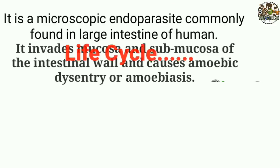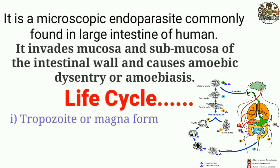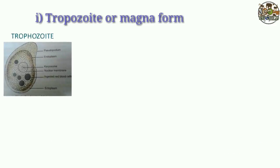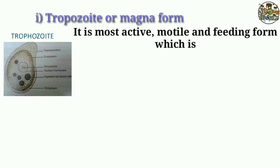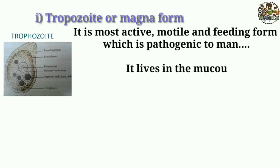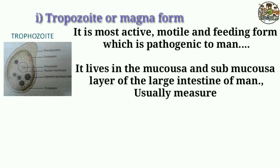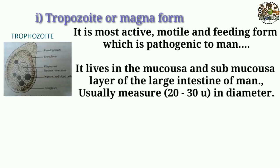The life cycle occurs in three forms: trophozoite or Magna form, pre-cystic or Minuta form, and cystic form. The trophozoite or Magna form is the most active, motile, and feeding form, which is pathogenic to humans. It lives in the mucosa and submucosal layer of the large intestine of humans, and usually measures 20 to 30 μm in diameter.